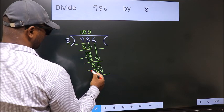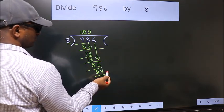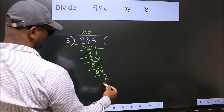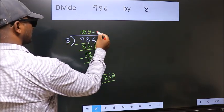Now we subtract. We get 2. No more numbers to bring down, so we stop here. This is our remainder. This is our quotient.